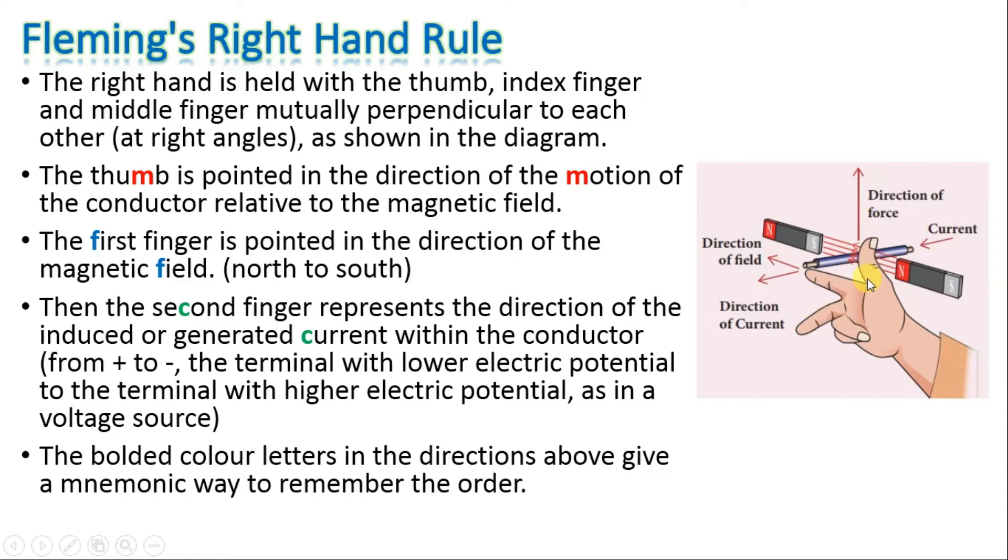The thumb is pointed in the direction of the motion of the conductor relative to the magnetic field. The first finger is pointed in the direction of the magnetic field, and then the second finger represents the direction...